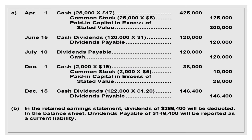On April 1: Cash is debited by $425,000 (25,000 shares × $17). Common Stock is credited by the stated value of $125,000, and the difference — Paid-in Capital in Excess of Stated Value — is credited $300,000. On June 15, date of declaration: Cash Dividends is debited $120,000 (120,000 shares × $1), and Dividends Payable — a current liability — is credited $120,000.